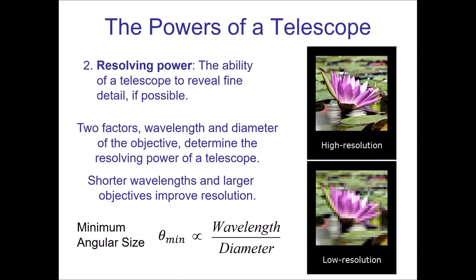There are two factors that determine resolving power, and we want this quantity to be as small as possible. There is a direct relationship with wavelength — shorter wavelengths give better resolving ability than longer wavelengths. It is also inversely related to the diameter of the telescope, so we want a large diameter telescope. Both factors point to wanting the diameter to be as large as possible.